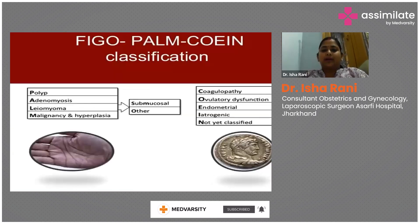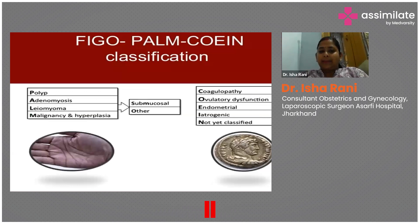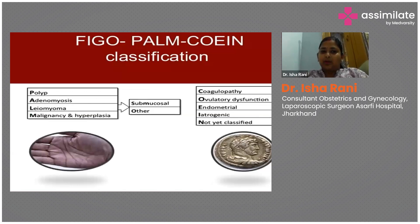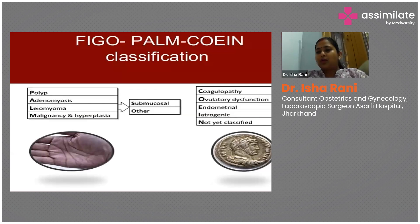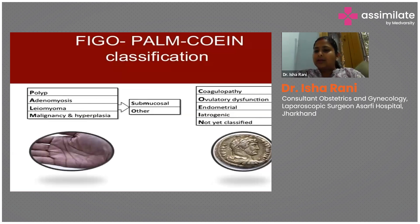The classification has two parts: the PALM part deals with structural problems like endometrial or cervical polyp, adenomyosis, leiomyoma (fibroid), and M for malignancy and hyperplasia. The non-structural causes are in the second half, which is COEIN.